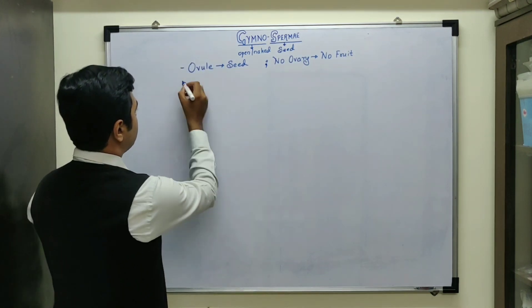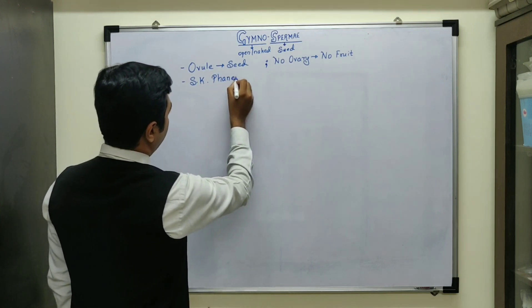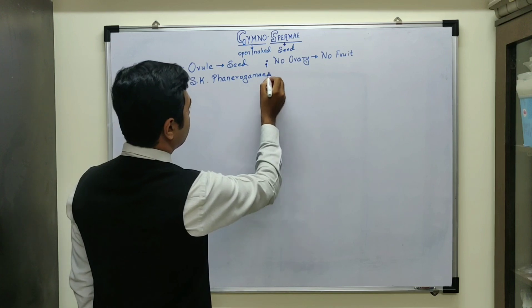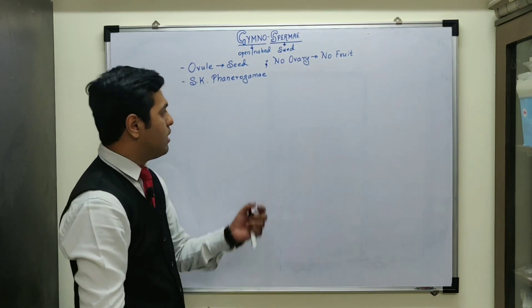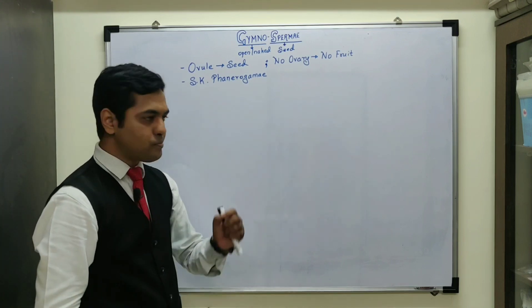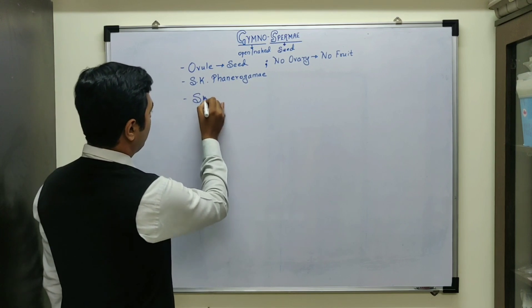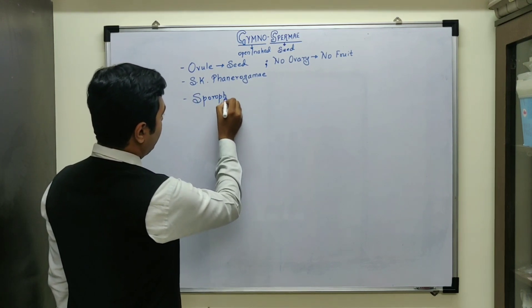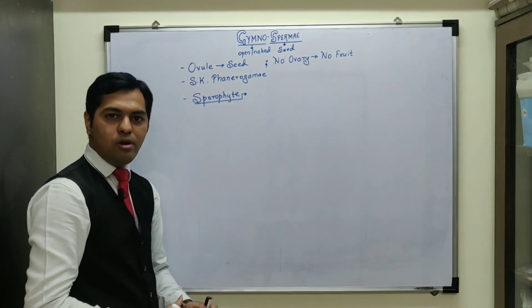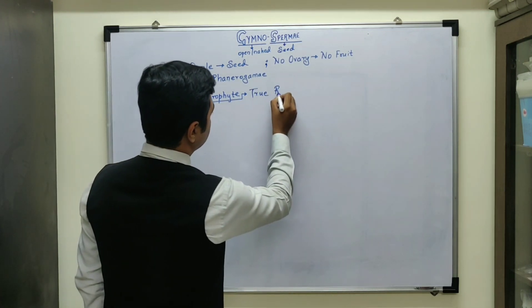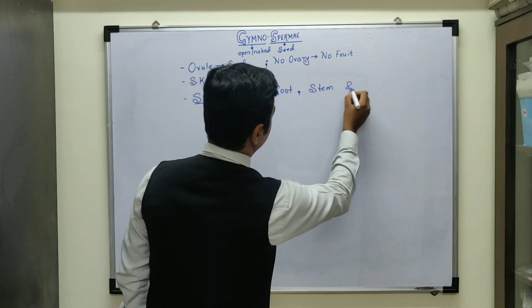Gymnosperme belongs specifically to the sub-kingdom Phanerogamia. Phanerogams are those plants in which the reproductive organs are clearly visible. Both Gymno and Angiosperme are categorized as phanerogams. Apart from this, in Gymnosperme we observe a sporophytic plant body, and in this sporophytic plant body we observe development of true root, stem, and presence of leaf.